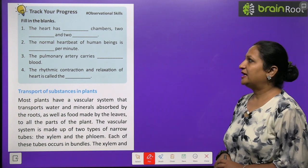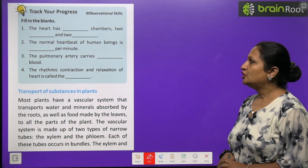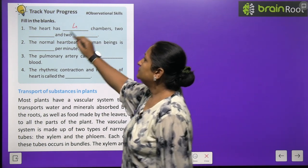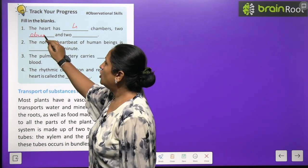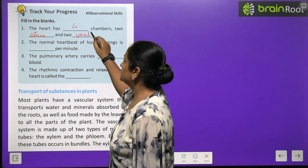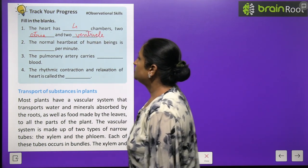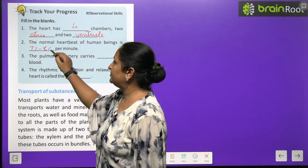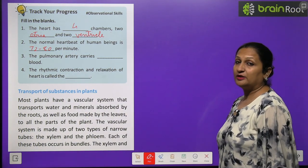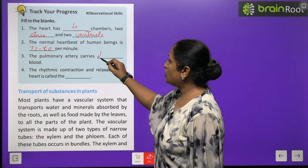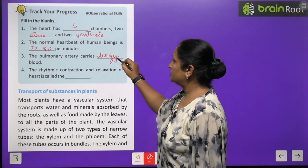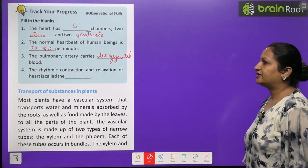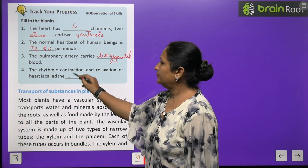Track your progress. Fill in the blanks: The heart has four chambers — two atria and two ventricles. The normal heartbeat of a human is 72 to 80 per minute. The pulmonary artery carries deoxygenated blood. The rhythmic contraction and relaxation of the heart is called heartbeat.